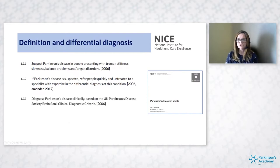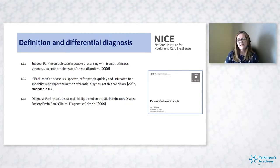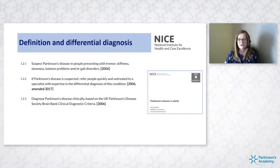The guidelines also ask us to use a diagnostic criteria. In the UK we use the Brain Bank criteria, which is a little out of date now but still a standardised tool. The MDS have also published diagnostic criteria which I find quite helpful because it includes prodromal features that we might see in Parkinson's. Using a combination of diagnostic criteria can be really helpful and is recommended within clinical practice.